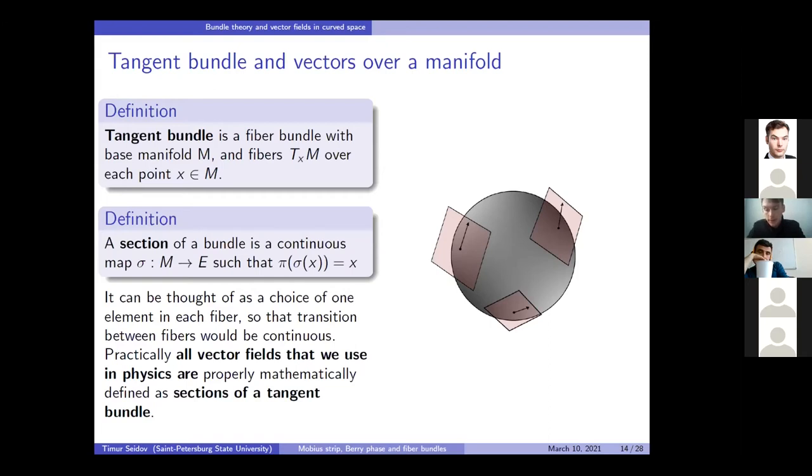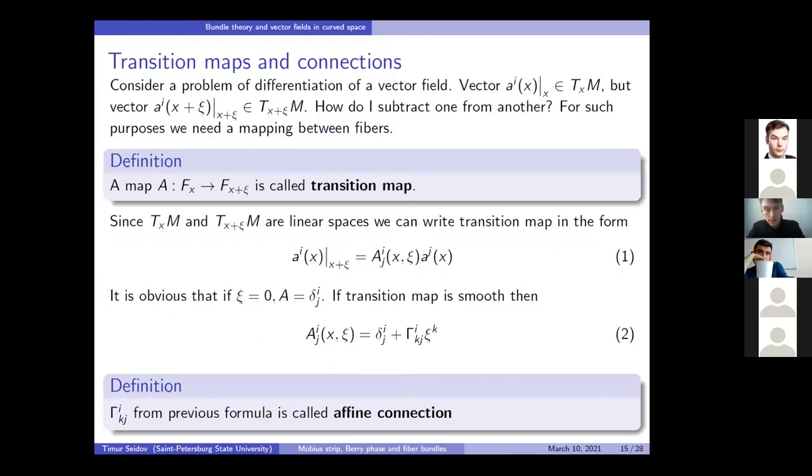For example, let's say that you want to differentiate a vector field by the coordinates in the base manifold. By definition, a derivative is the difference between values of a function at infinitely close points. But we have values of a function, a vector function, that live in different spaces. How can we subtract them? To do this, we need a mapping that takes them to the same space.